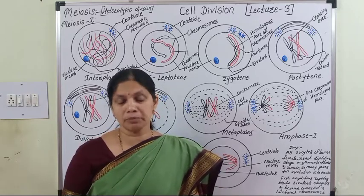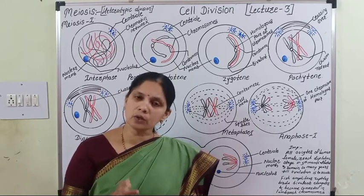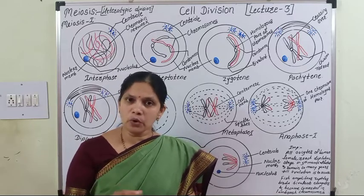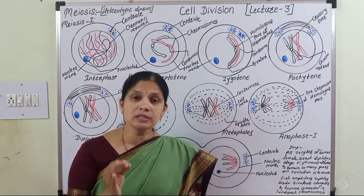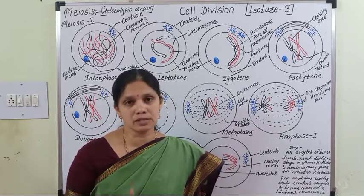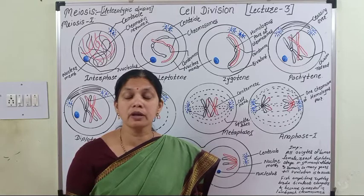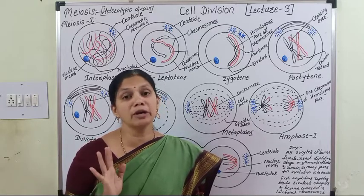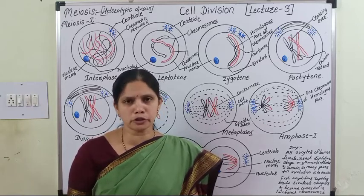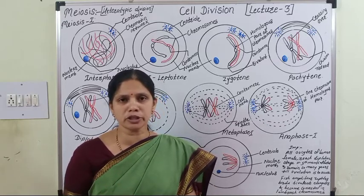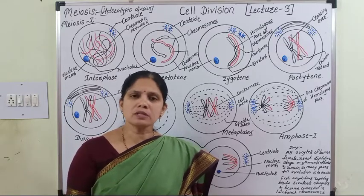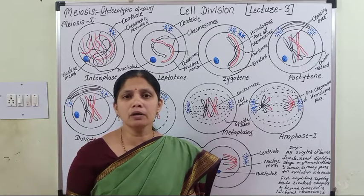The four daughter cells have their chromosome number reduced to half. Meiosis always takes place in the sex cells or germ cells during sexual reproduction, at the time of gamete formation. Due to meiosis, the chromosome number is reduced to half.